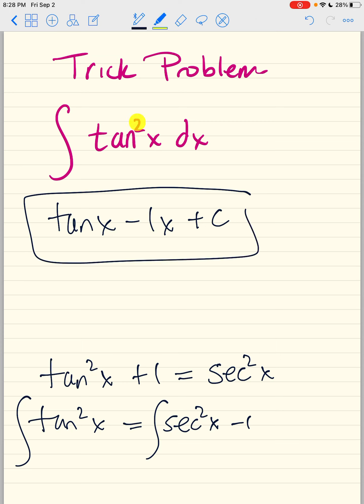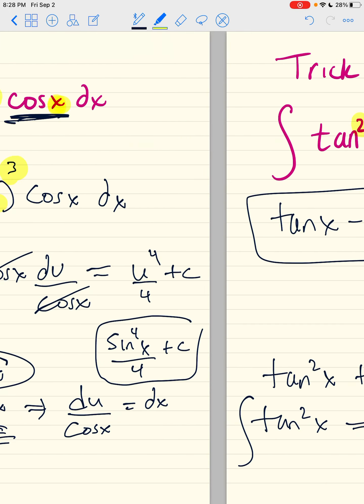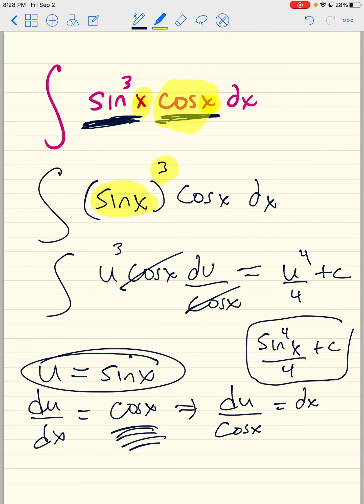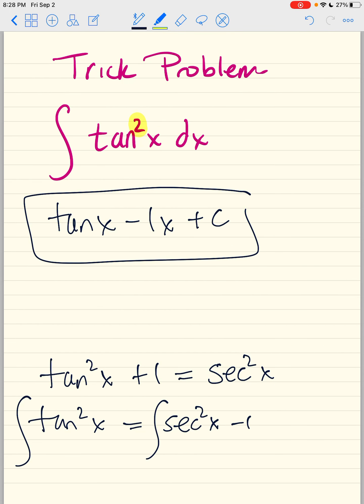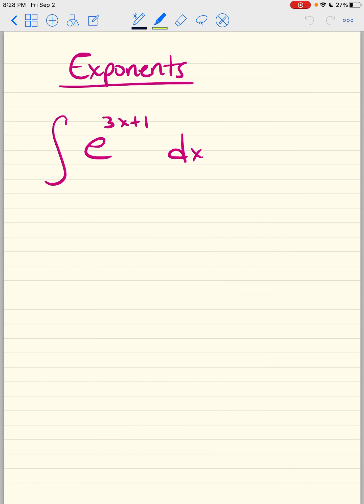So generally speaking, when your trig has an exponent, there must be someone right next to them. Otherwise, you have to go to the identity. I hope you have a great night. Come back for the exponential video.